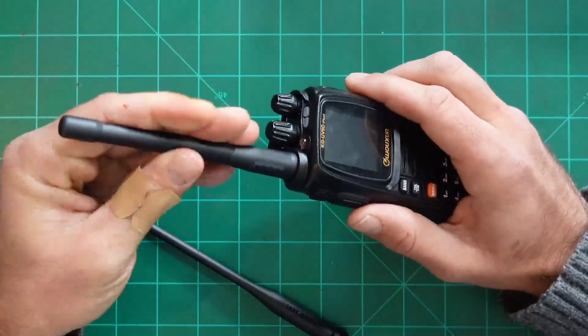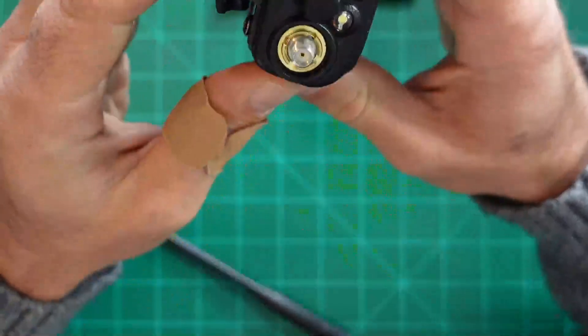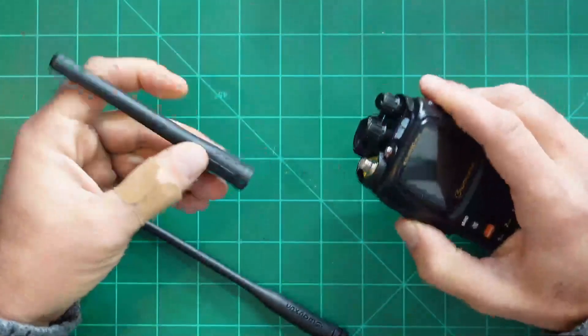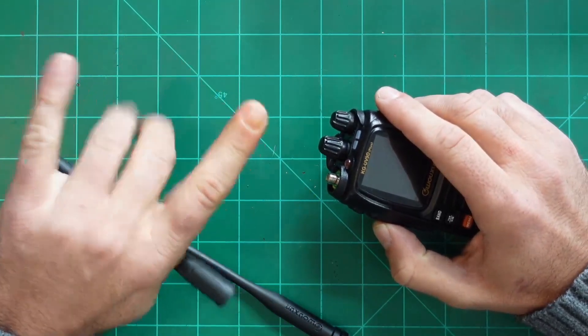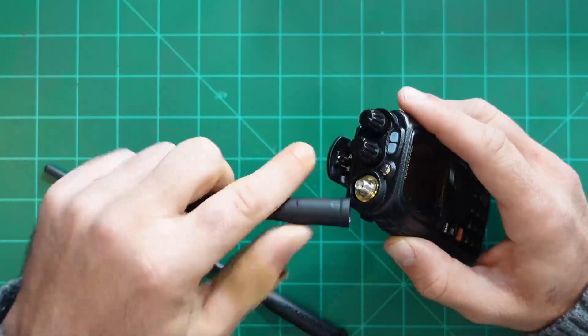One thing I should make a note of here is the antenna port on the radio itself is going to be a female, an SMA female. That means if you have an external antenna that maybe you want to use or if you want to use an adapter to connect this to an external antenna, you're going to want to make sure that you have an SMA male to screw in.